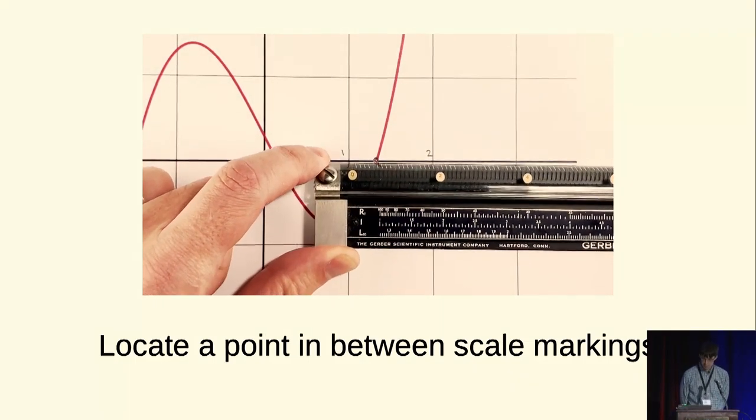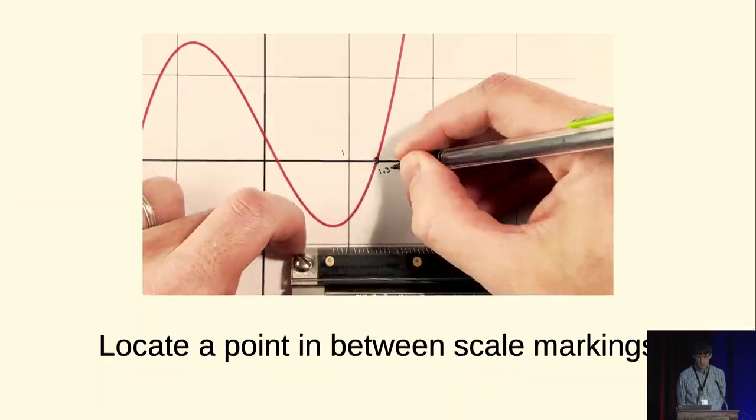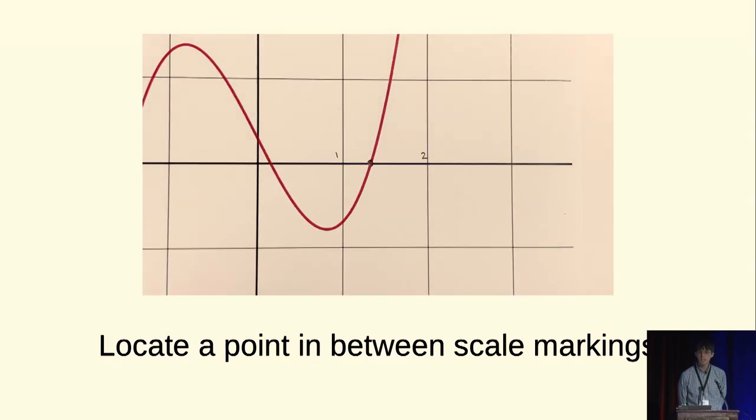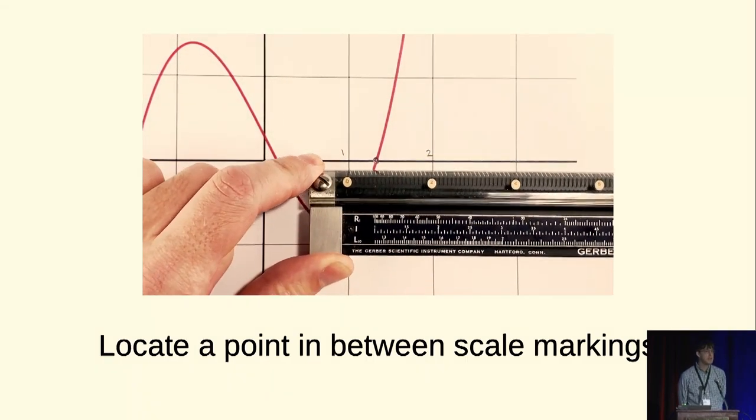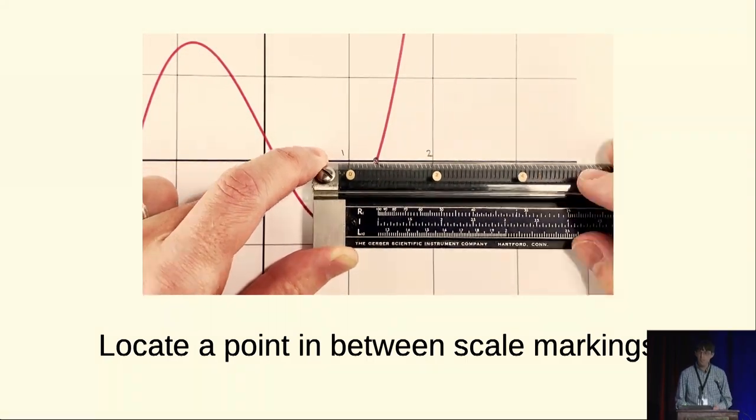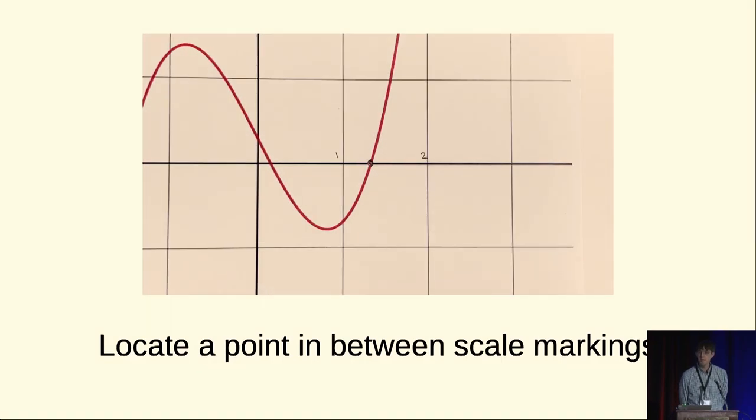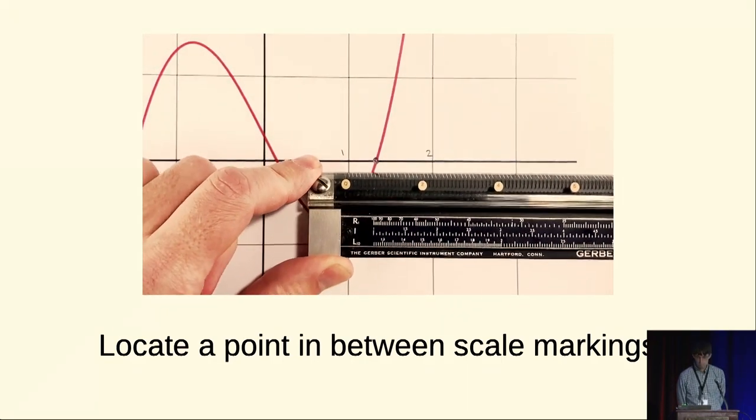I'm just going to show you a few simple tricks you can do. Here's one use. You can locate a point that's in between scale markings on your paper. You lay down the variable scale and stretch it to fit the same scale on your paper and then you can measure in between points with it.